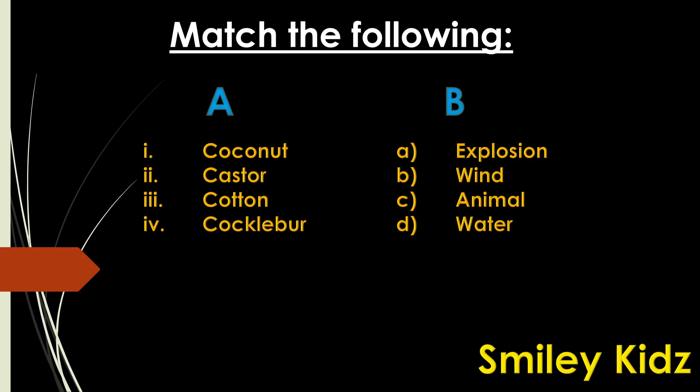Now let us do a simple match the following. First one is coconut — coconut will be dispersed by water, so it is D. Second one is castor — castor will be dispersed by explosion, so it is A. Third one is cotton — cotton will be dispersed by wind, so it is B. The fourth one is cocklebur — cocklebur will be dispersed by animals, so it is C.